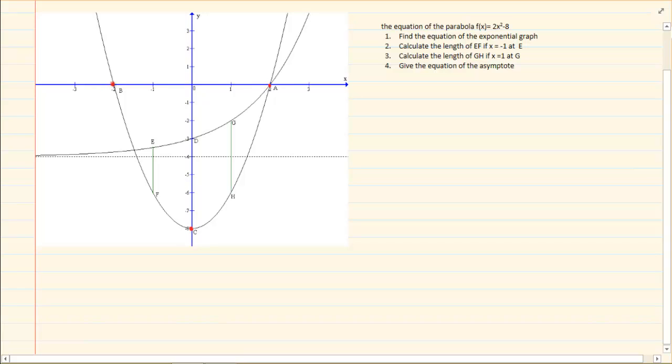Now they say find the equation of the exponential graph. Remember I told you with the exponential graph, even though there are three unknowns, usually if they do not give you the unknown or they don't give you an equation, we usually only work with two unknowns. So this is the equation that I am giving you for this graph.